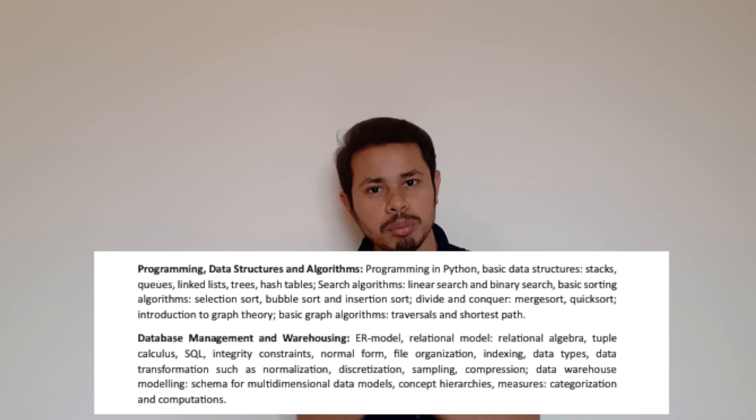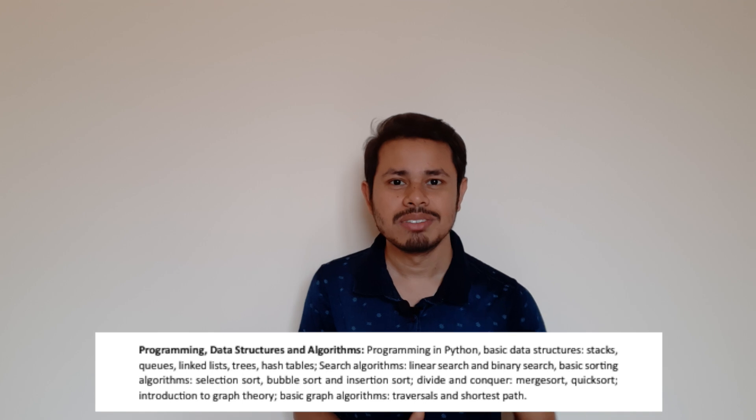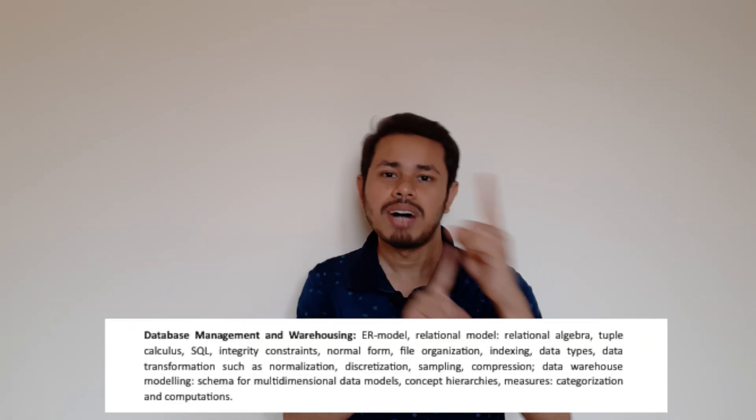The next part is programming, data structures, and algorithms. This is totally similar to the computer science syllabus. The only difference is programming in Python — if you see the first point, it mentions programming in Python. So you should have at least a little knowledge of Python and practice a few examples. You don't need to know Python in great detail — just be familiar with the syntax. Everything else — searching, sorting, data structures, algorithms — is totally the same as the CS syllabus, so strong CS students can get maximum marks from these sections.